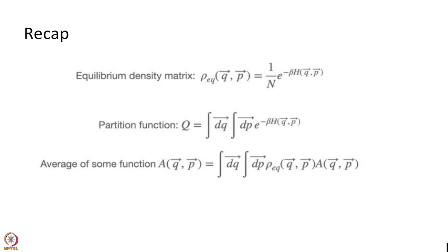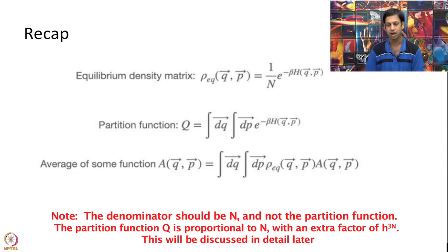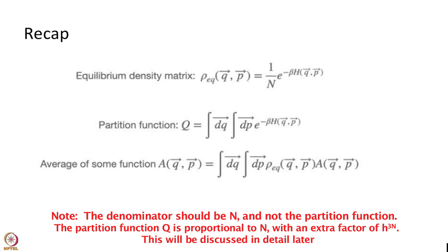A quick recap of module 5. We had given you a partial derivation of calculating the equilibrium density matrix. It is given by the Boltzmann distribution e to the power of minus beta H, where H is the Hamiltonian, divided by Q. Q is called the partition function, which is an integral over all space dP dQ into e to the power of minus beta H. We also discussed how to calculate the average of any property. If I have any quantity A as a function of Q and P, to find the average of A I must integrate over all P and Q: rho, which gives the probability of being at Q and P, multiplied by A, which gives the value at Q and P. In the last module we looked at a few examples: average momentum and average kinetic energy.